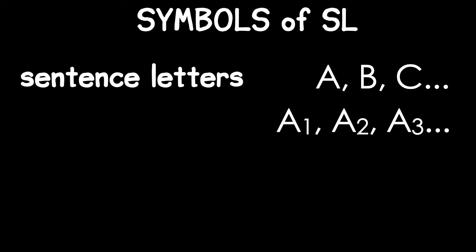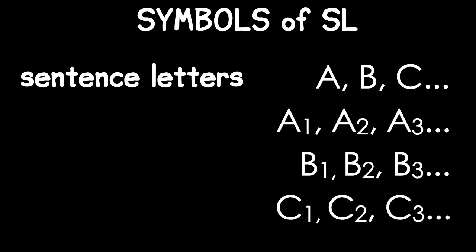We also allow subscripts. So we can have A1, A2, A3, and so on. We can also have B1, B2, B3, B4, C1, C2, and so on. And that means we have as many sentence letters as we need. Strictly speaking, there are infinitely many of them. Although, of course, we're never going to use all of them.